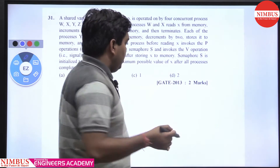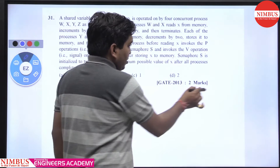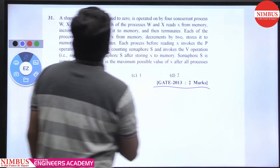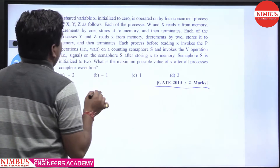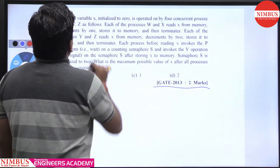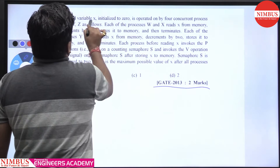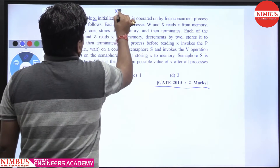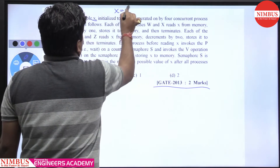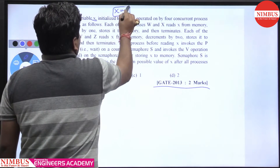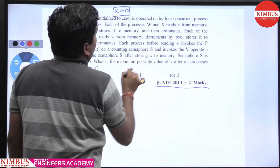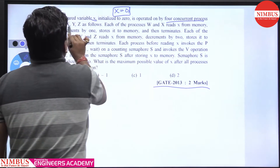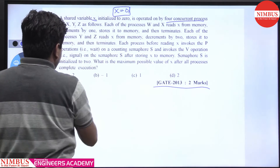Hello students. This is a GATE 2013 question. There is a shared variable x which is initialized to 0, operated by 4 concurrent processes w, x, y, z.